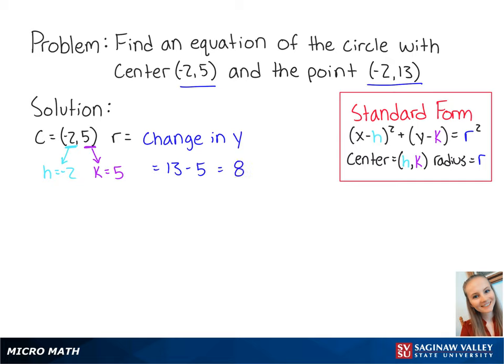Now that we have our center and our radius, we can write our equation as (x + 2)² + (y - 5)² = 8².